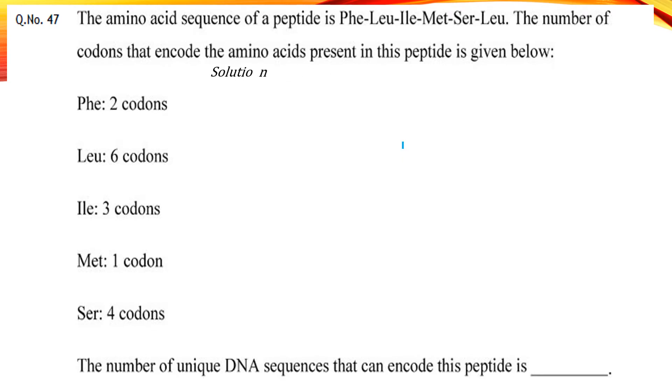The solution to this question is straightforward. Just multiply the number of codons available for all the amino acids in the peptide. This will give you 864 possible sequences.